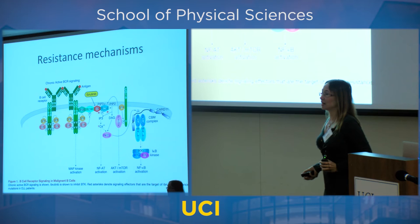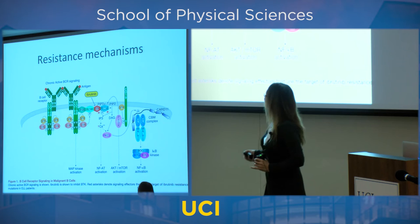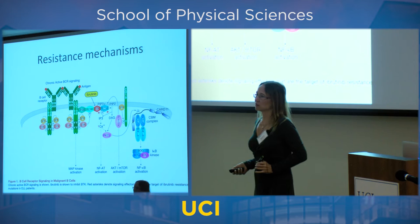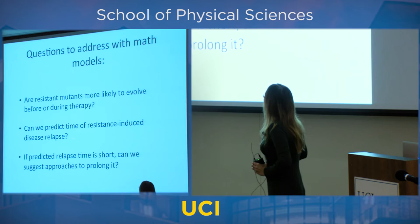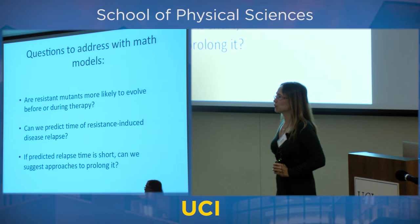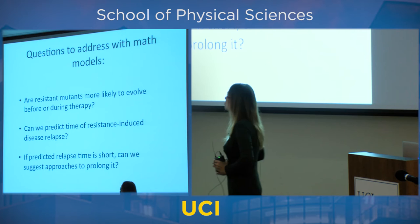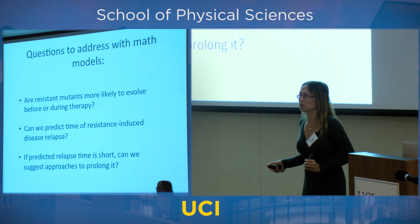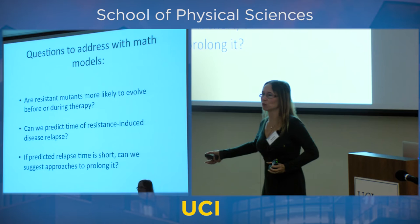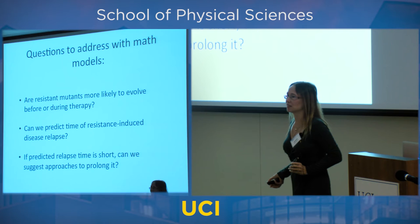We wanted to see what happens to patients who experience this resistance. There are three questions: Are resistant mutations already in the blood when patients first come to the doctor, or are they generated during treatment? Can we predict resistance-induced relapse for individual patients? And if it's predicted that treatment will be ineffective, what can we do?